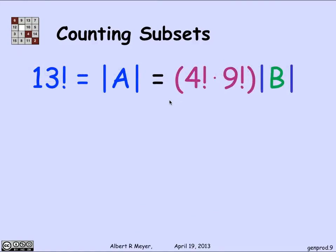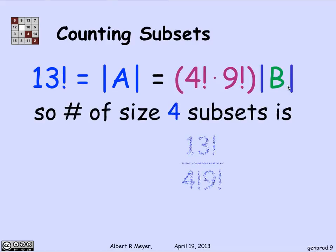And that means that by applying the division rule, I've discovered that the size of A, which I know is 13 factorial, is equal to that K of the K to 1 of 4 factorial times 9 factorial times the size of B. B is the subset of size 4 that I'm trying to count. And so what I get is that the size of B is simply 13 factorial divided by that K, 4 factorial, 9 factorial. 13 factorial over 4 factorial, 9 factorial.